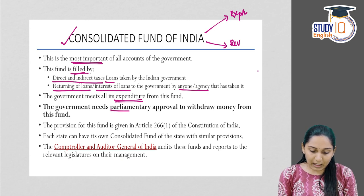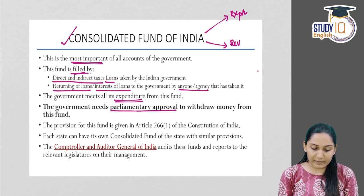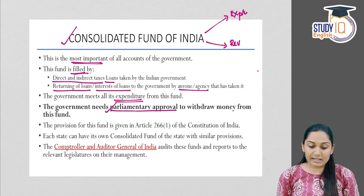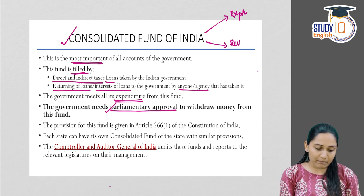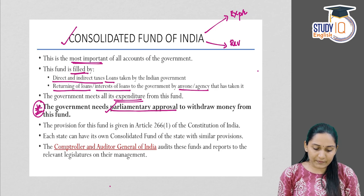The government needs parliamentary approval to withdraw money from the Consolidated Fund of India. This is very important, and it also helps us understand why we need a Contingency Fund of India.